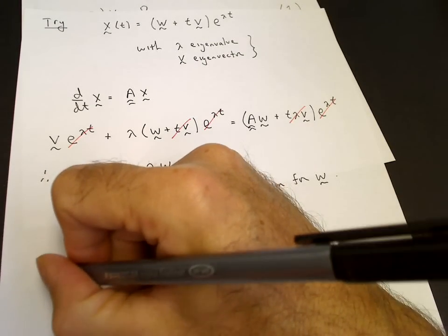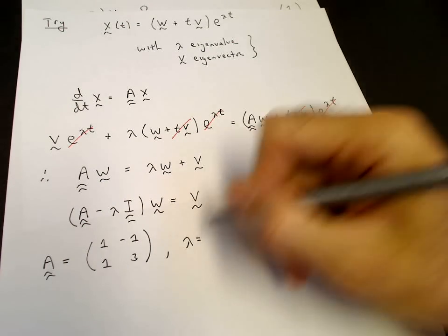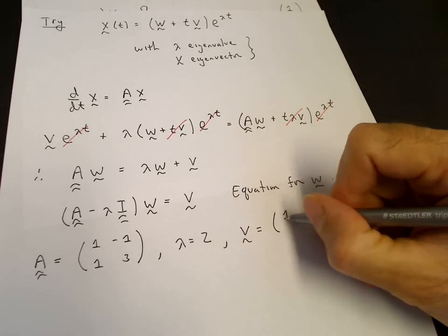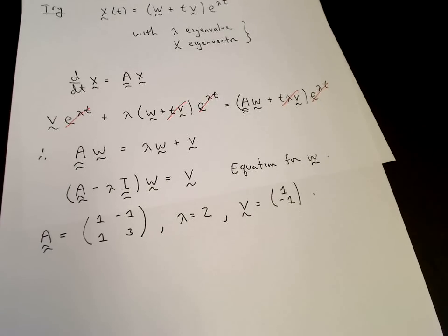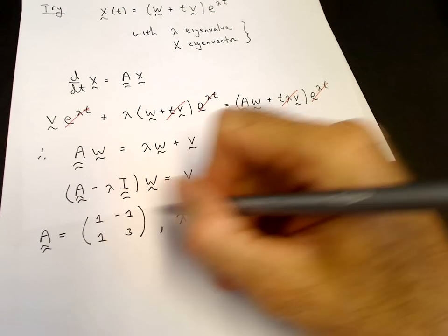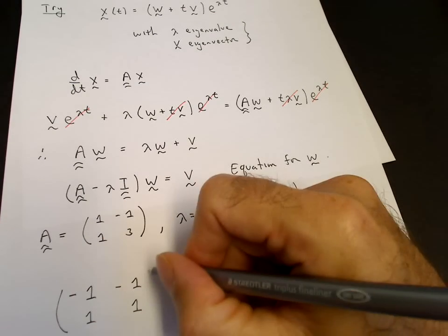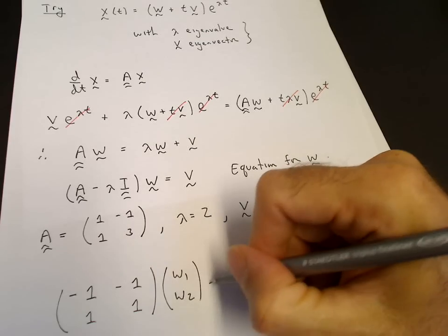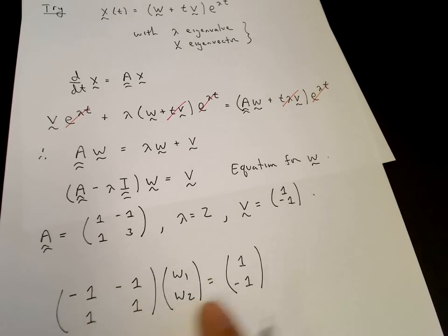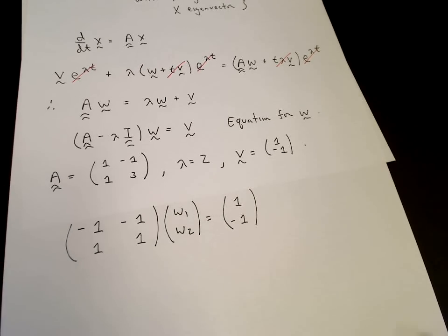We now plug in our values: A is [[1, -1], [1, 3]], lambda is 2, and v is [1, -1]. Subtracting 2 off the diagonal, (A minus 2I) is [[-1, -1], [1, 1]]. So the matrix equation [[-1, -1], [1, 1]] times [w1, w2] equals [1, -1]. The first equation is: minus w1 minus w2 equals 1. The second equation is: w1 plus w2 equals minus 1. The second equation is just the first multiplied by minus 1, so there is only one independent equation.